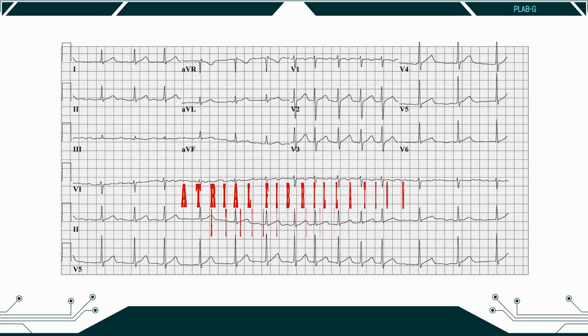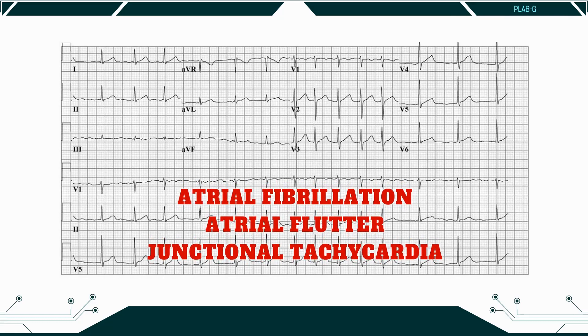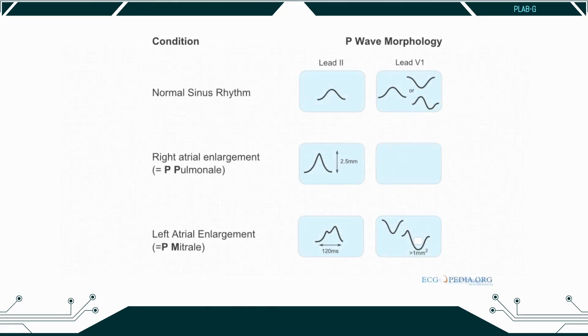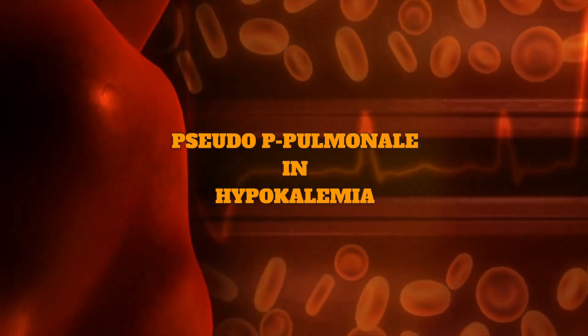Can you see a P wave? If the rhythm is atrial fibrillation, atrial flutter or a junctional tachycardia, you may not be able to see a P wave. You can also assess whether each P wave is associated with a QRS complex. P waves not in association with QRS complexes indicate complete heart block. We also need to assess the P wave morphology. There can be notched or biphasic P waves known as P mitrale, indicative of left atrial hypertrophy, which may be caused by mitral stenosis. There may also be tall P waves, called P pulmonale, indicative of right atrial hypertrophy, often secondary to tricuspid stenosis or pulmonary hypertension. A similar picture can be seen in hypokalemia, known as pseudo-P pulmonale.